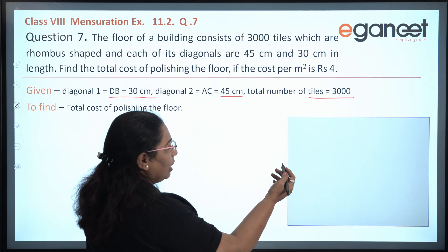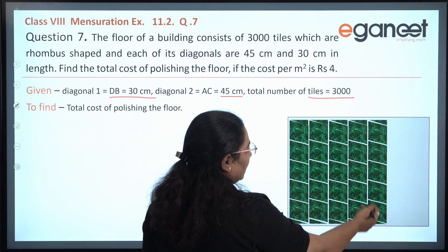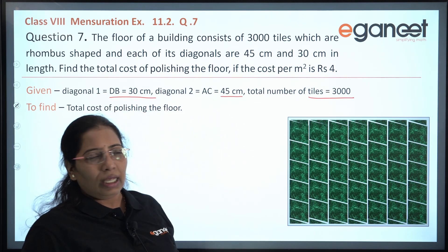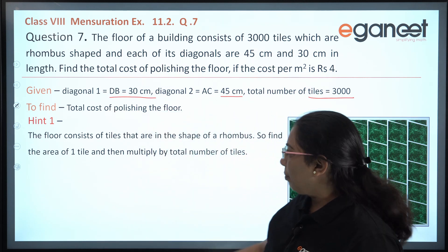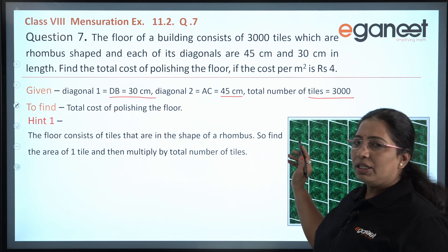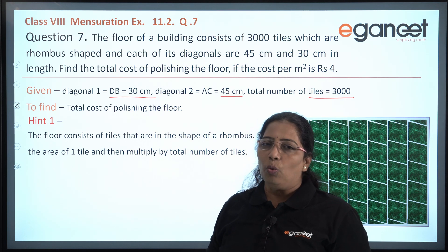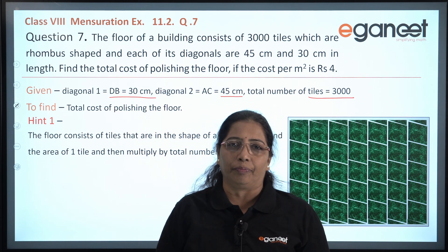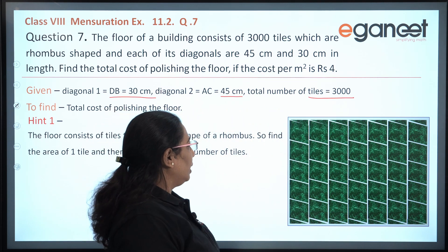A floor is mostly rectangular in shape. We are fixing the tiles on the floor. To find out the cost of polishing the total floor, here is a hint: the floor consists of tiles in the shape of a rhombus, so we have to find the area of each tile and multiply it by the number of tiles. Can you solve this problem with this hint?